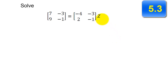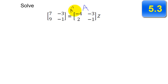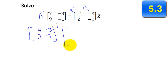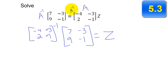Now we use a calculator to solve a matrix equation. When solving for a matrix variable, you multiply both sides by the inverse of the coefficient matrix to isolate the variable. So if we have matrix A times Z equals B, we apply A inverse on both sides. A inverse times A cancels out, leaving just Z. What you type in the calculator is the matrix negative 4, negative 3, 2, negative 1, then inverse, multiplied by the matrix 7, negative 3, 9, negative 1, and that equals Z.